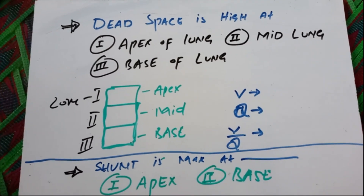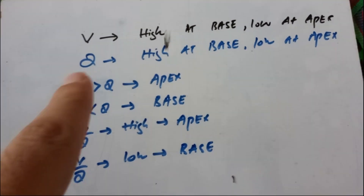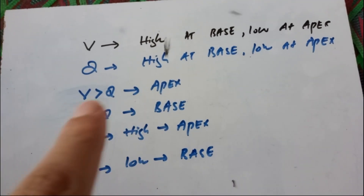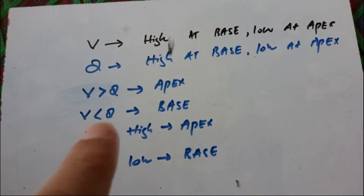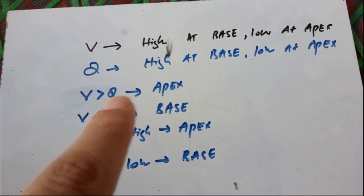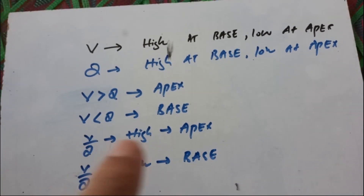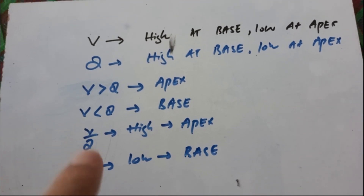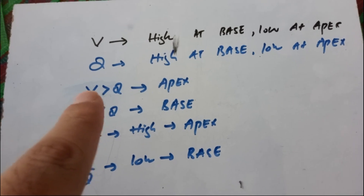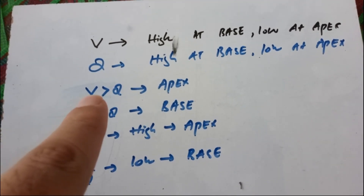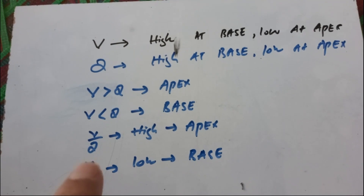To summarize: ventilation V is high at the base but low at the apex; Q is high at the base and low at the apex. However, V is more than Q at the apex — ventilation exceeds perfusion at the apex — while at the base, ventilation is less than perfusion. So V/Q is high at the apex and low at the base. When V is more than Q, the numerator exceeds the denominator, giving a high ratio.